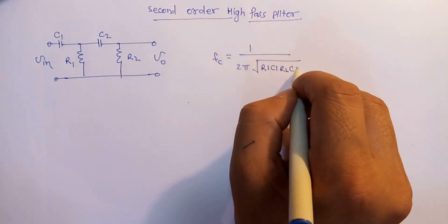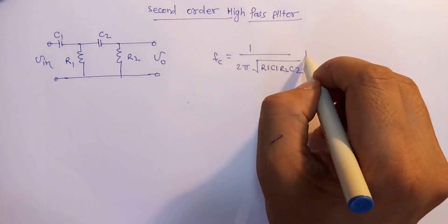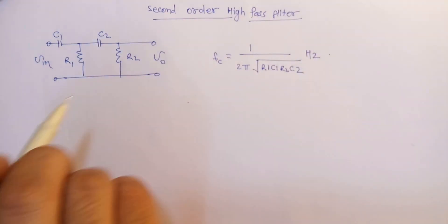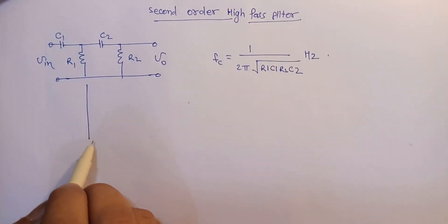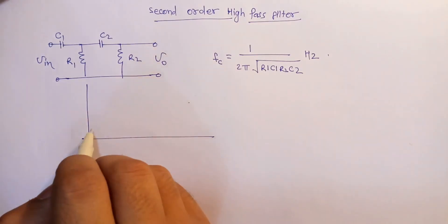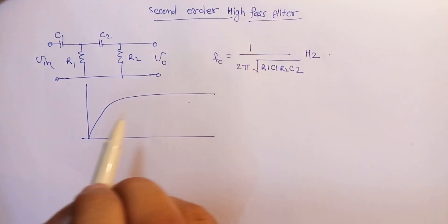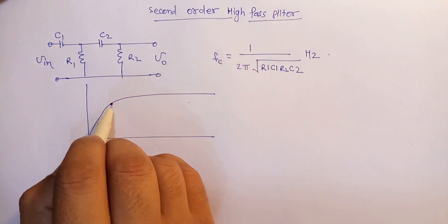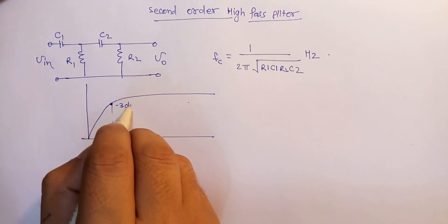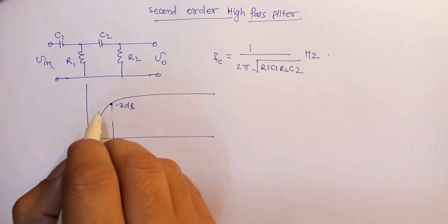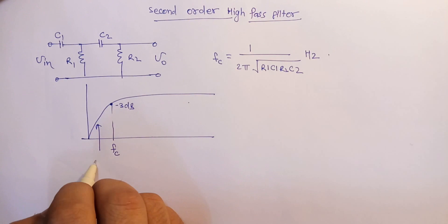R2 and C2 hertz. And if we draw the Bode plot of the second order filter, that will be the FC minus 3 dB cutoff, but the roll-off will be plus 40 dB per